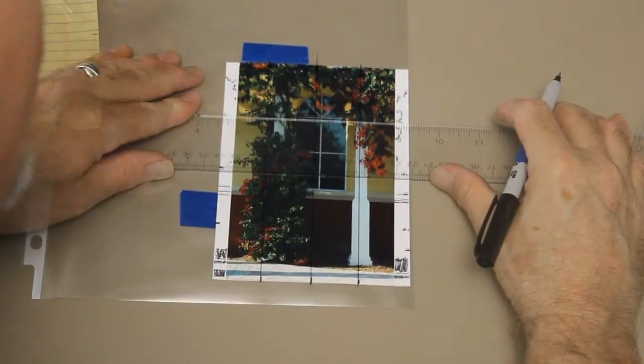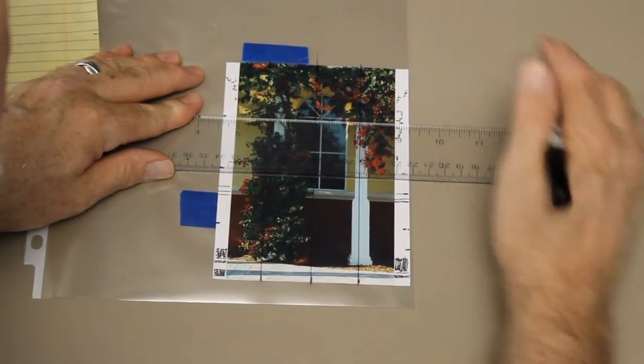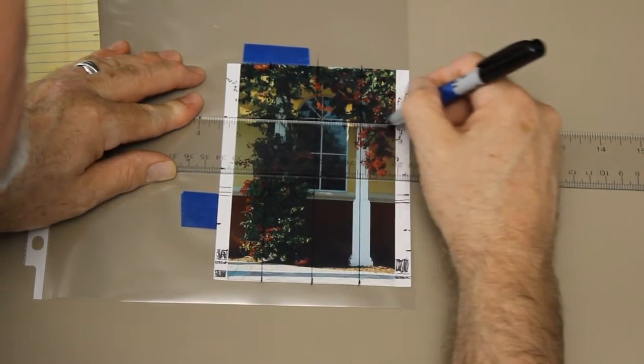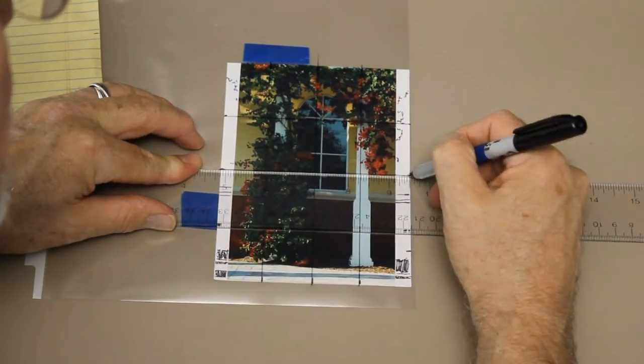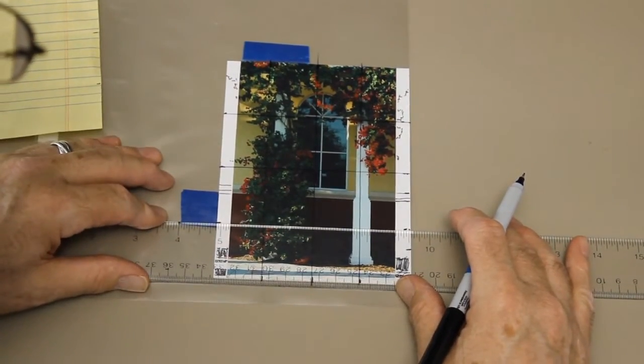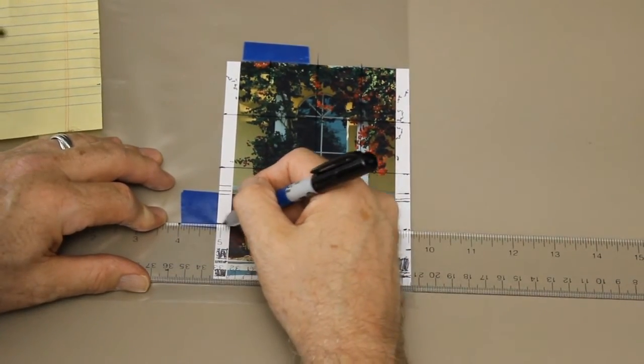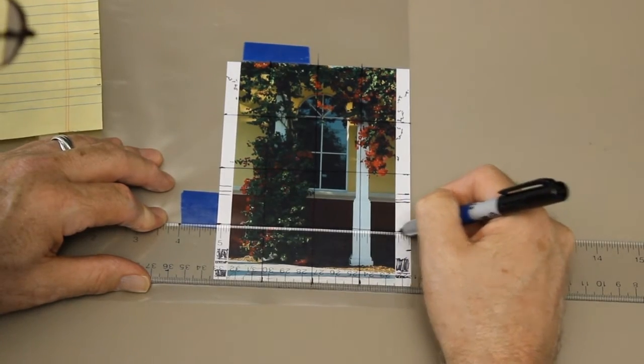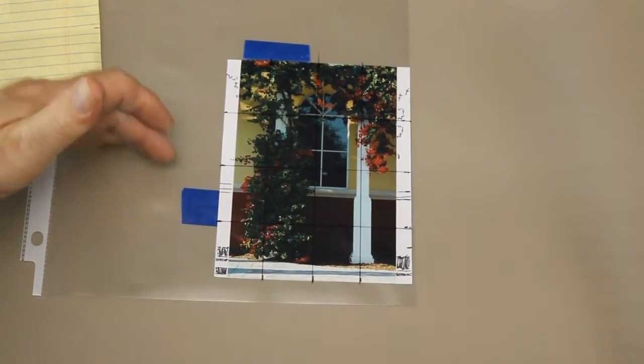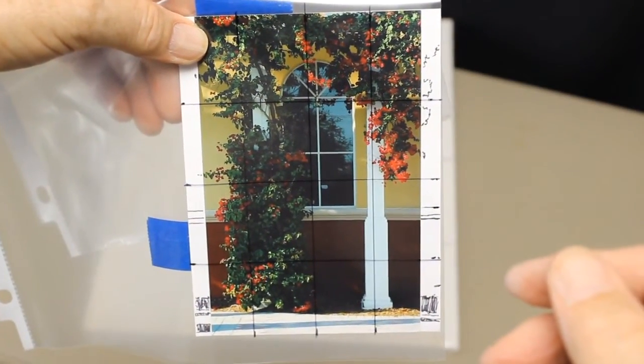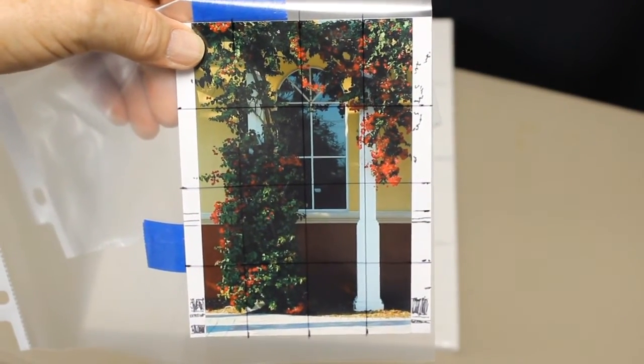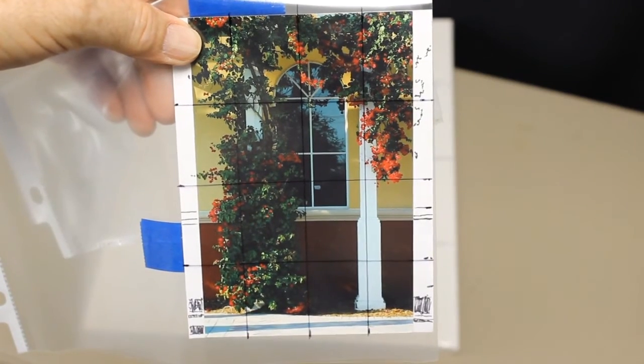Having marked the divisions, I'll draw the horizontal lines on the sheet protector. This, finally, is my gridded reference. I have 16 equal subdivisions, and the grid includes the added area on the left and right of my photograph.